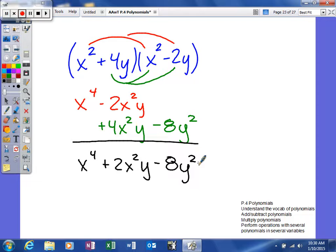So as you can see, we ended up with a fourth degree trinomial with a leading coefficient of 1. We have multiple variables. This term has a degree of 4, this term has a degree of 3, this term has a degree of 2. All right, there you go.